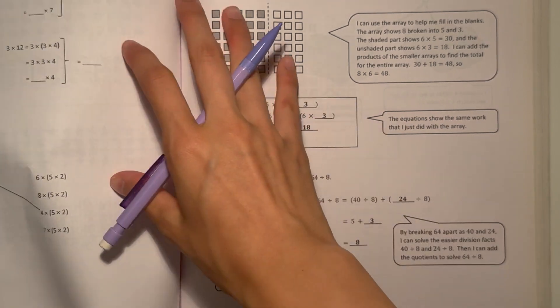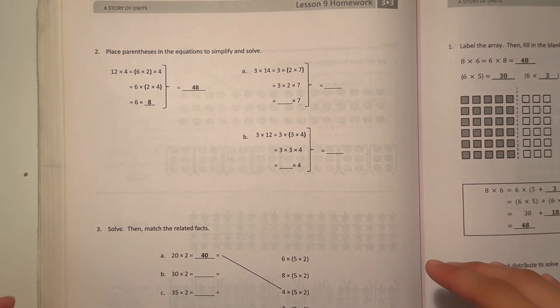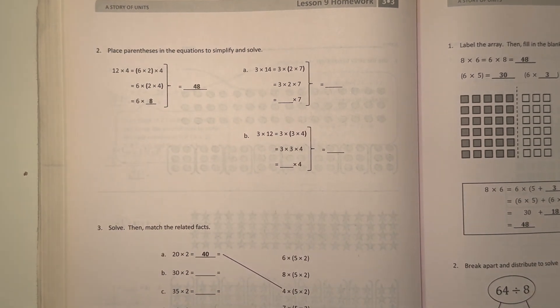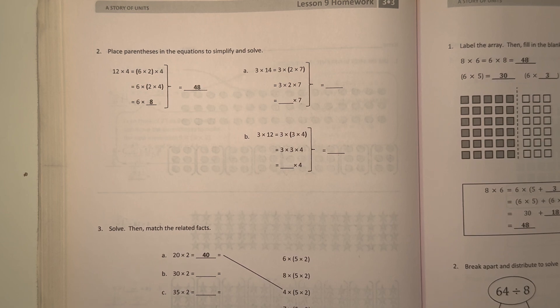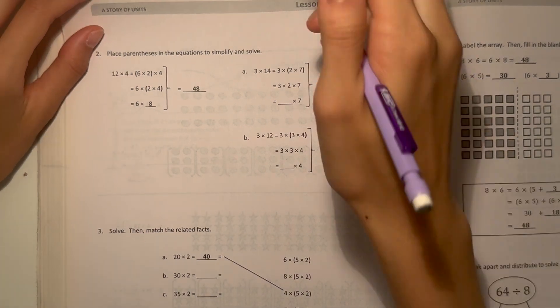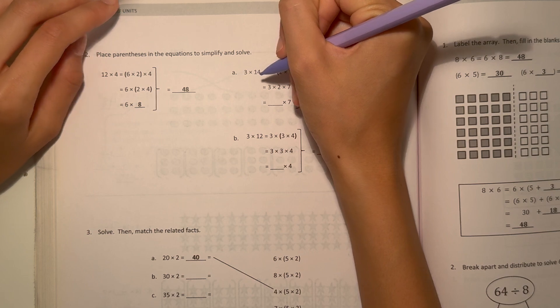Alright, next page. Number 2: Place parentheses in the equations to simplify and solve. Alright, so we have 3 times 14 equals 3 times 2 times 7.